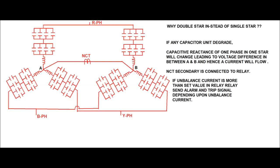Why is double star connection used for the capacitor bank instead of single star? If a single star connection is used, there is no possibility to detect a faulty unit in the capacitor bank. In the double star connection, two star points are formed, and between the two star points a neutral CT is connected.